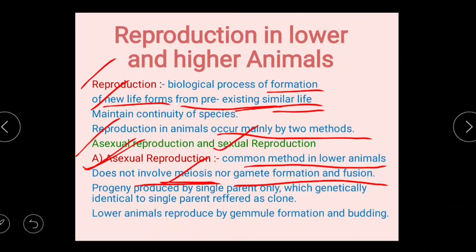In asexual reproduction, the progeny — meaning offspring or young ones — is produced by a single parent only and is genetically identical to that single parent, and is referred to as clones.